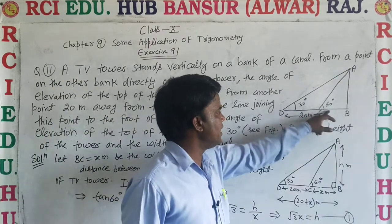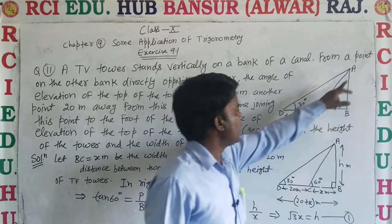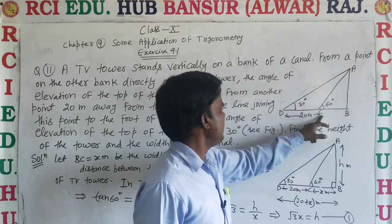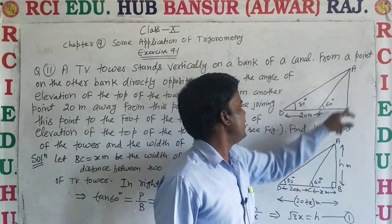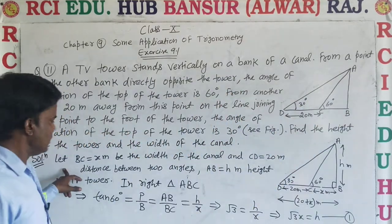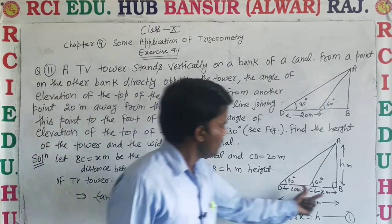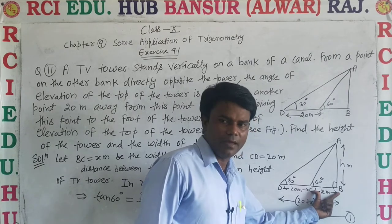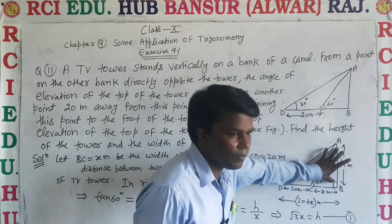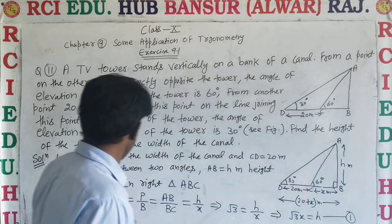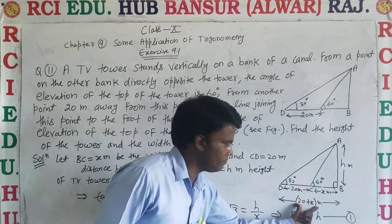The figure is given with two angles, 30 degrees and 60 degrees, and in between distance is 20 meters. Triangles ABC and ABD are formed. For the solution, let BC equal to X meters be the width of the canal, and AB is the height of the tower H. The total base DB is 20 plus X meters.